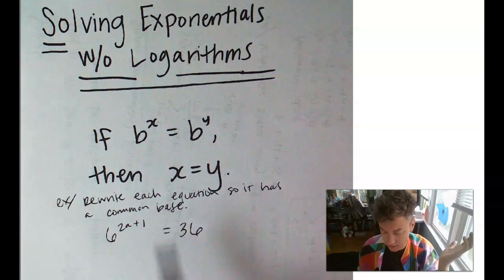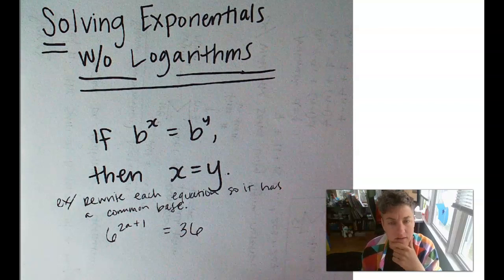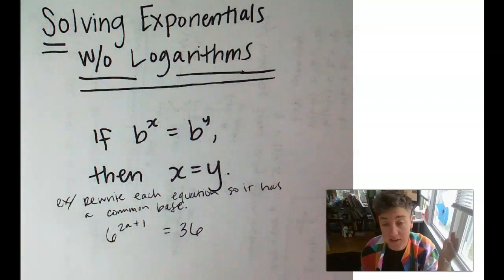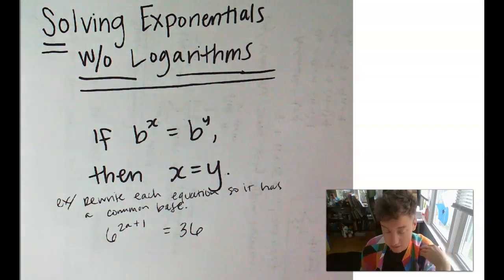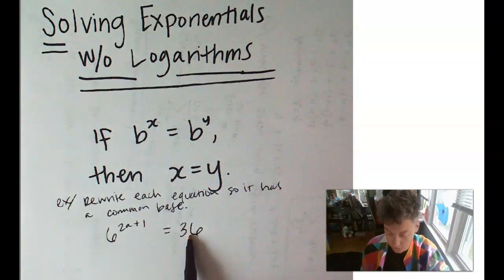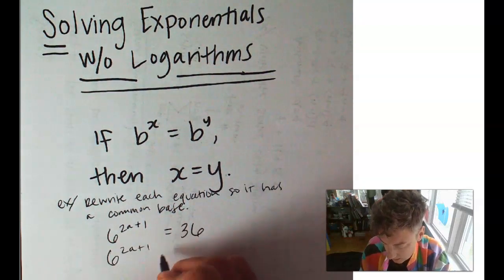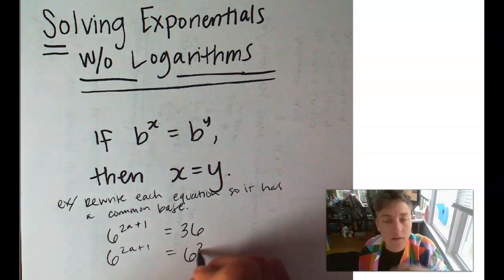So, we're looking at 6 and 36. What could we possibly use as a common base? Well, 6. We could use 6 as a common base. This already has a base of 6, and we know 36 is 6 squared. So, this is 6 to the 2a plus 1 equals 6 squared.